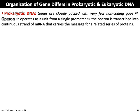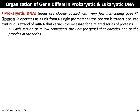We'll continue our lecture about the organization of genes, which differs in prokaryotes and eukaryotes. Prokaryotic DNA genes are closely packed with few non-coding gaps. There is a structure called the operon; operons in prokaryotes operate as a single unit from a single promoter, transcribed into a continuous strand of messenger RNA that carries the message for a related series of proteins. Each section of messenger RNA represents the unit or gene that encodes one of the proteins in the series.